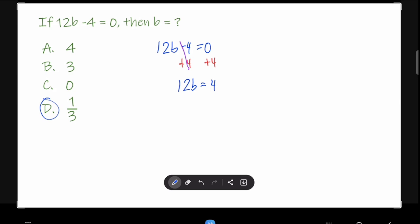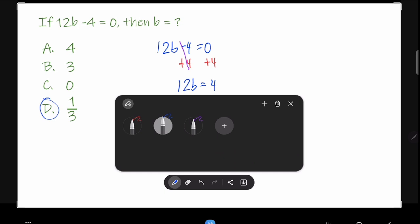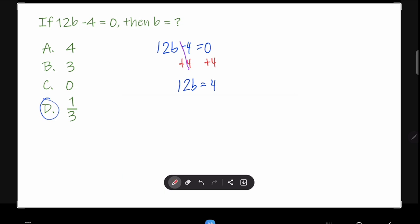Now, we still have 12 times B equals 4. If the number is at the side of the variable, you have to divide it to cancel. You do not subtract because the operation of the 12 and the B is multiplication.